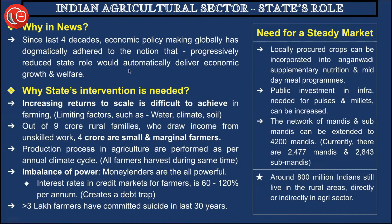Due to a variety of limiting factors — from uncertainties in weather to soil fertility and water availability — increasing returns to scale are very difficult to achieve in farming. It cannot be determined whether there can be increasing returns for the harvest. Secondly, out of nine crore families who draw income from unskilled work, four crores are small and marginal farmers who are completely dependent on the policies and the will of the government or the state.